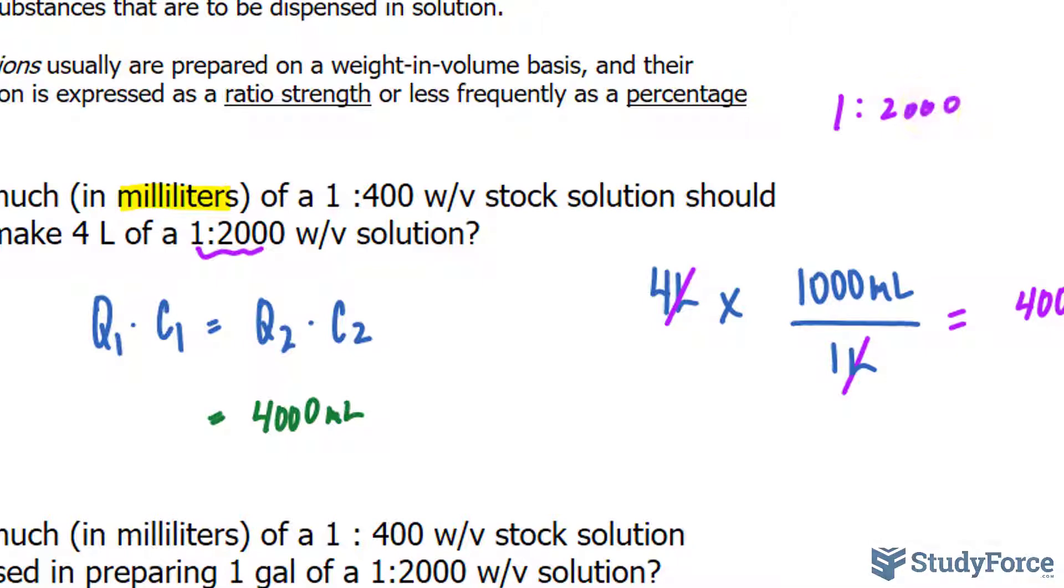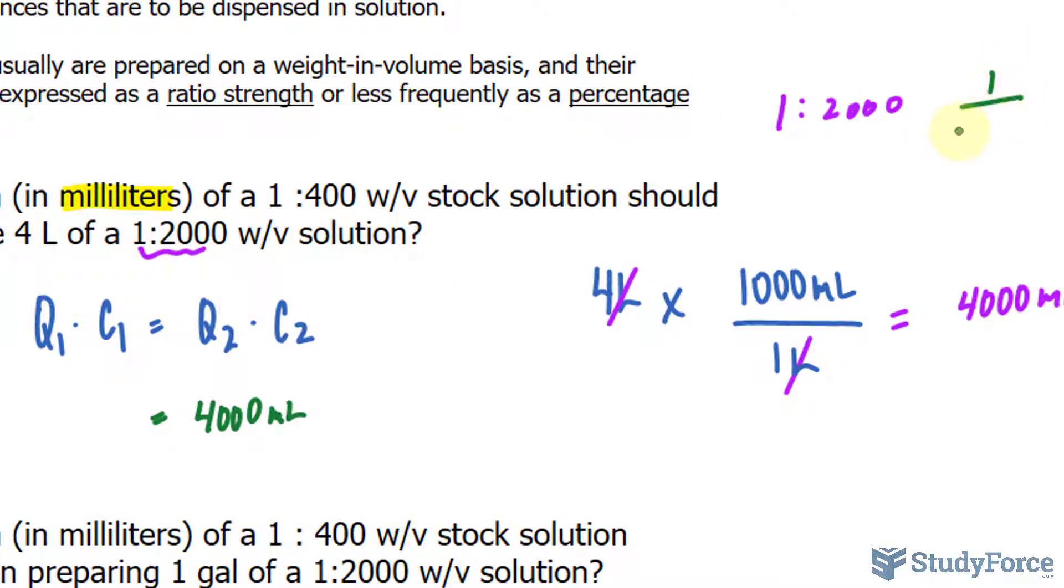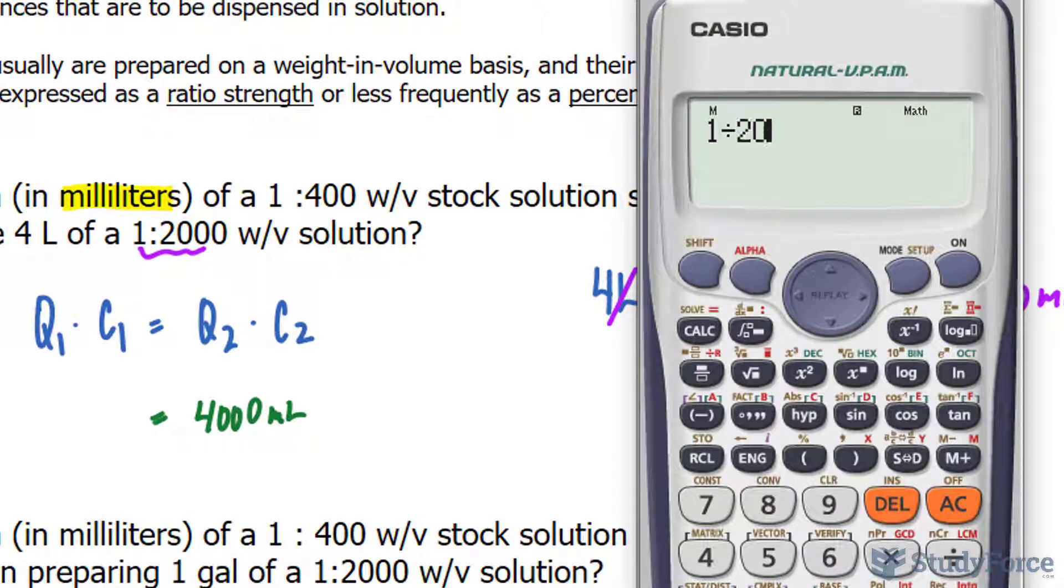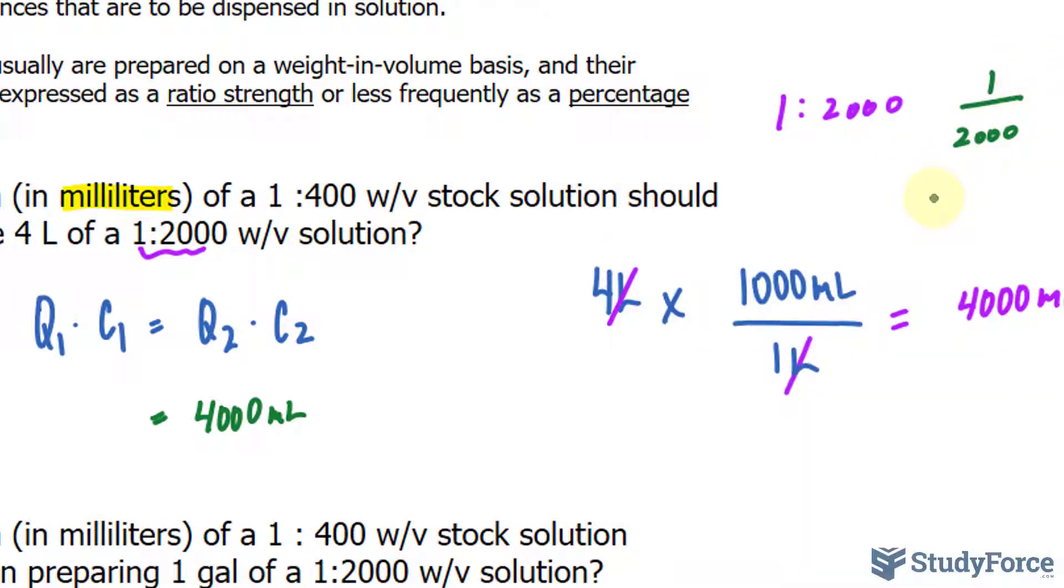Now to help you understand what that means, that's the same thing as 1 over 2,000. 1 over 2,000, written as a decimal, is 5 times 10 to the power of negative 4, or in other words, 0.0005. That value will get placed in for C2, 0.0005, and it is unitless. Notice no units are written next to it.